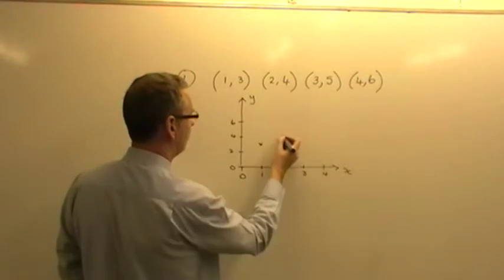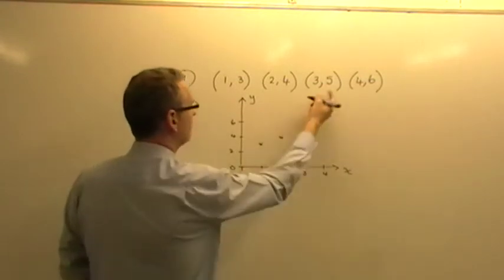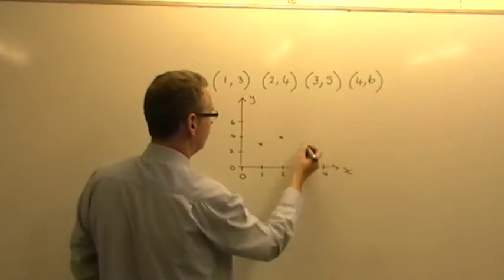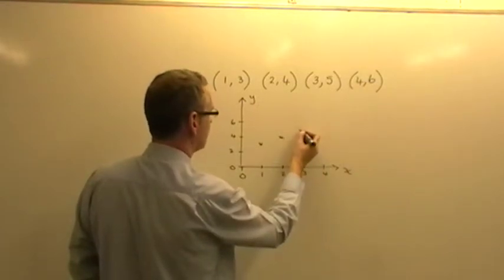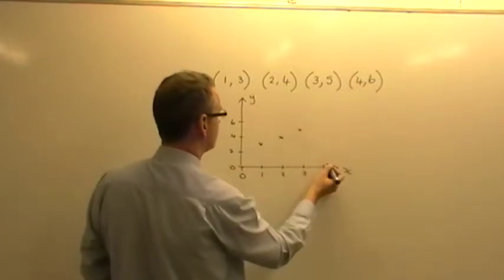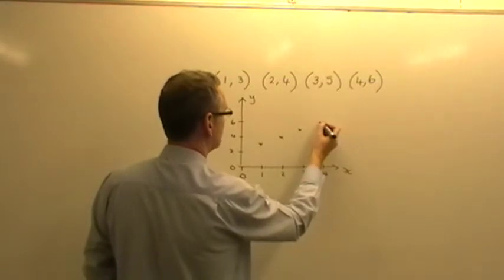Plotting the points 1,3: 1 across, 3 up, something like that. 2,4: 2 across, 4 up, like so. 3,5: 3 across, 5 up, something like so. And 4 across, 6 up, something like so.